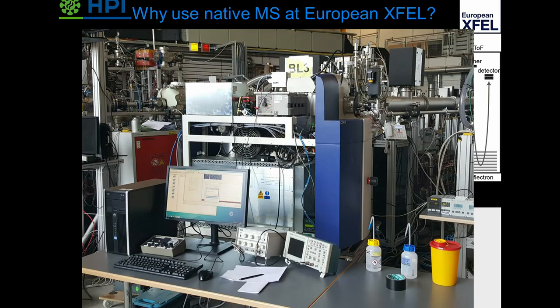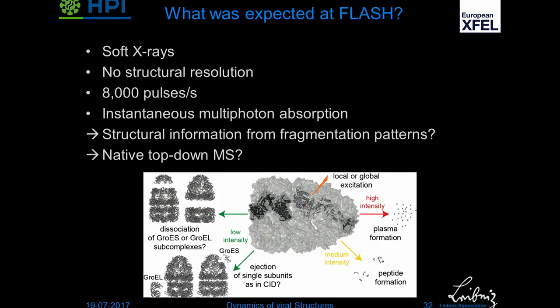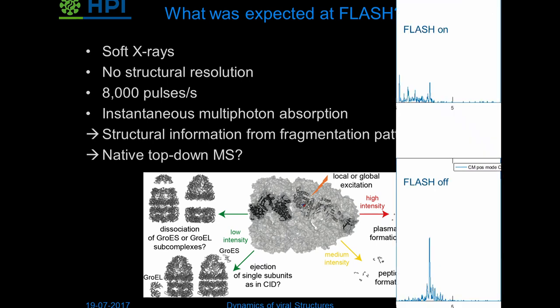We performed the first experiments at FLASH. Here you can see our setup — basically a commercial mass spectrometer into which we drilled a hole to connect it to the vacuum system of the beam line. At FLASH we were not interested in structure because we have soft X-rays and can't get to meaningful resolution, but we have a very similar pulse structure, so we can test a lot of things. The idea was that we would get multi-photon absorption, and depending on the intensity, we would go from plasma to peptide or single protein ejection and sub-complex formation — very interesting for proteomics applications. Without FLASH we got a normal mass spectrum; with FLASH we got a lot of new peaks, which are hopefully peptides.